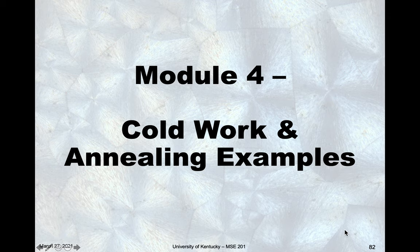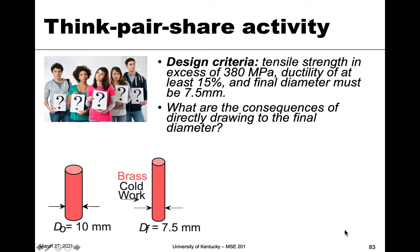In this module we're going to look at an example relating to both cold work and annealing — a design problem based on that. We have a brass rod with an original diameter of 10 millimeters and we want the final diameter to be 7.5 millimeters. The design criteria require tensile strength in excess of 380 megapascals, ductility of at least 15 percent, and a final diameter of 7.5 millimeters.